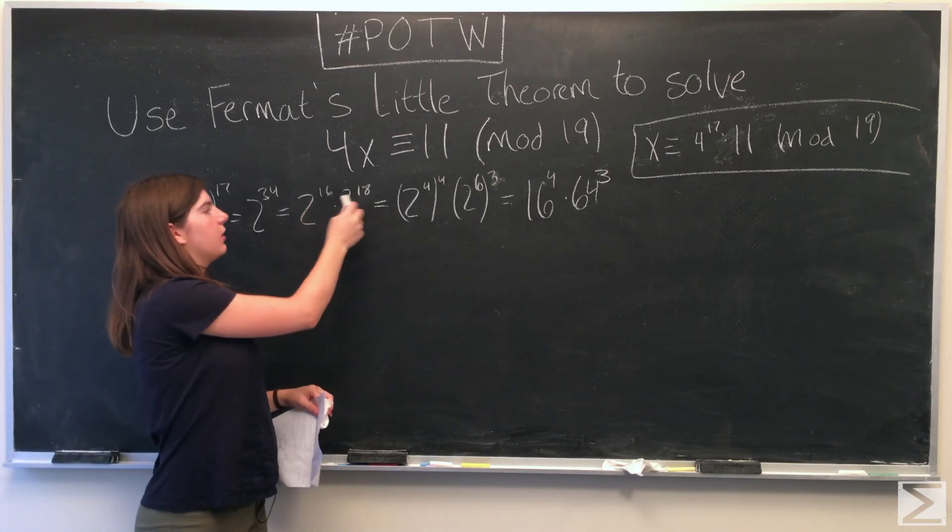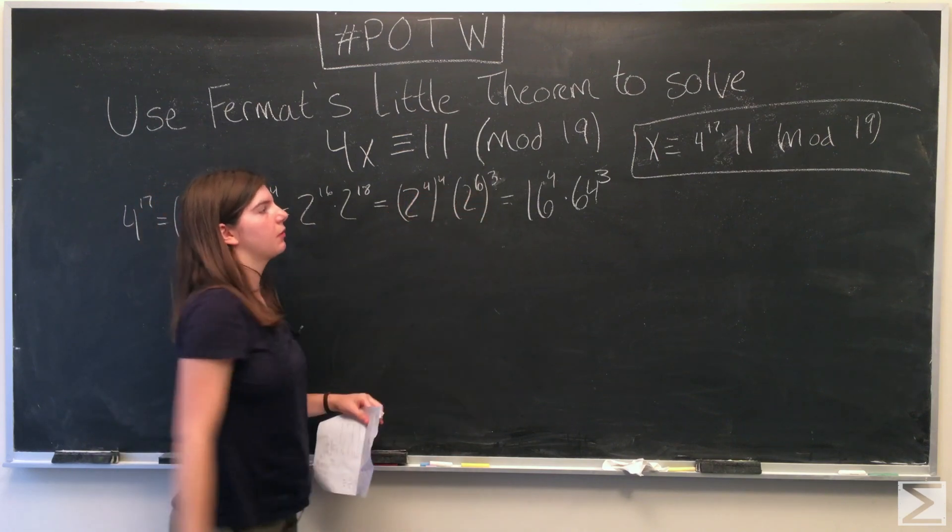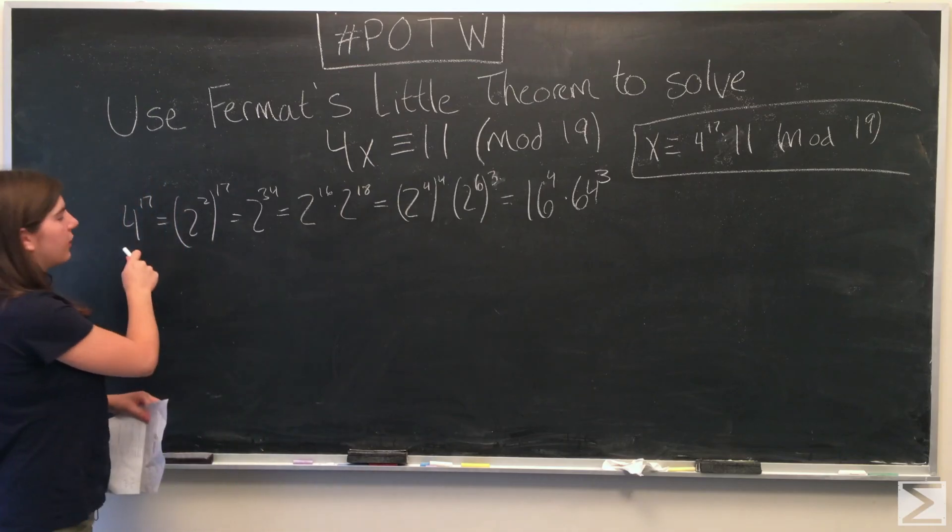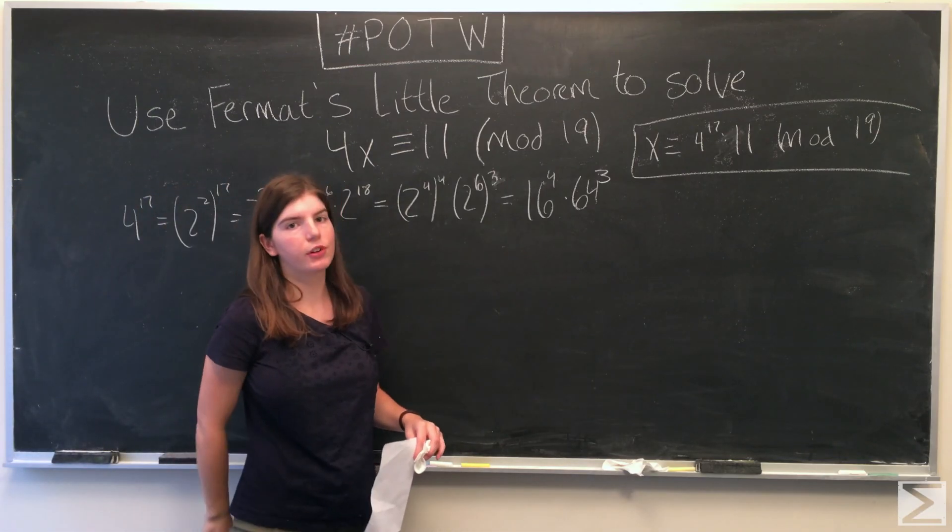And 16 is 2 to the 4th raised to the power of 4. 18 is 2 to the 6th raised to the power of 3. So now we have 4 to the 17th is equal to 16 to the 4th times 64 to the 3rd.